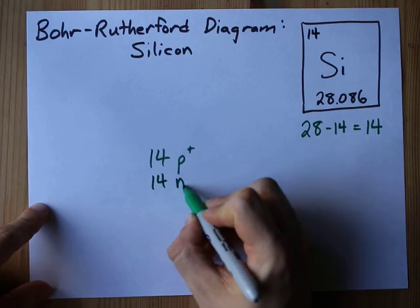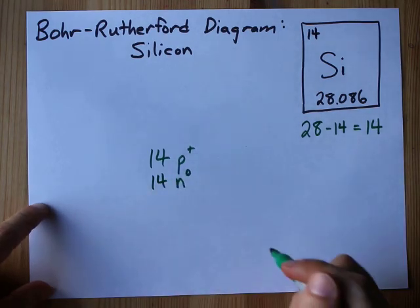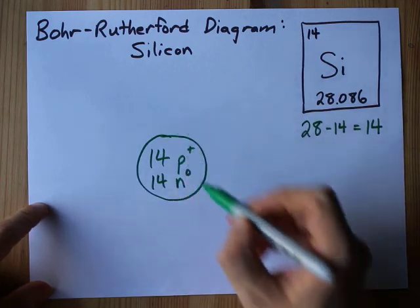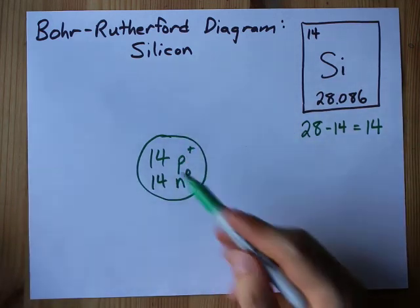The fact that these numbers match is a coincidence. It won't always be like that. 14 and 14 makes 28 things in the nucleus of the atom. There you go.